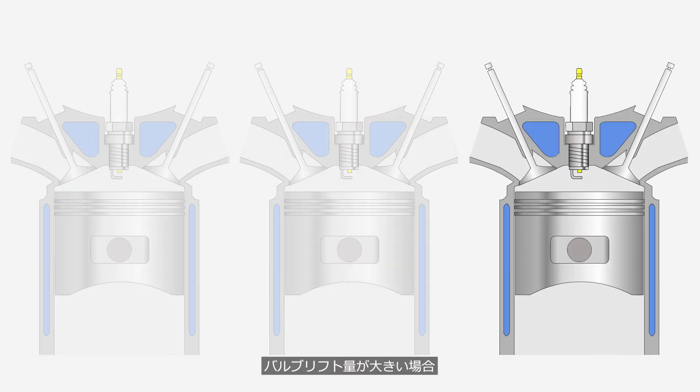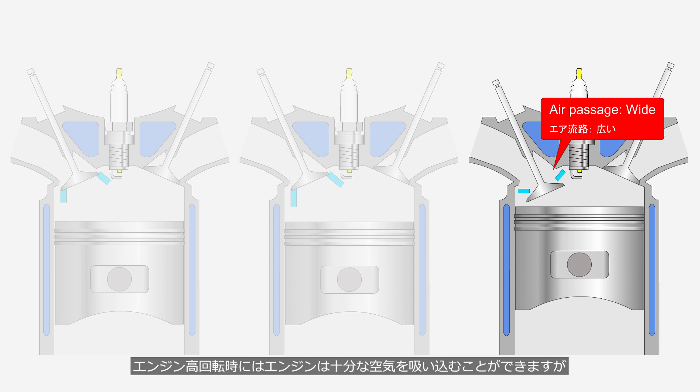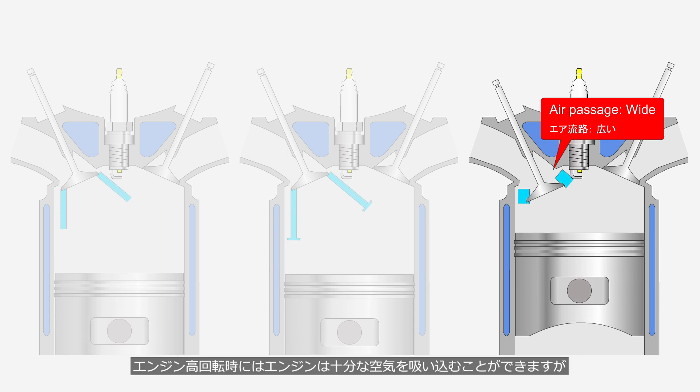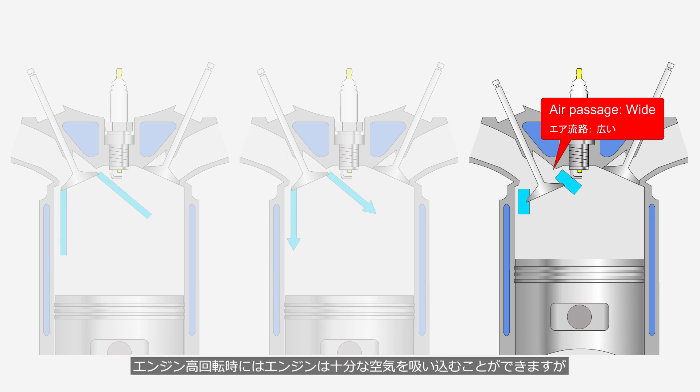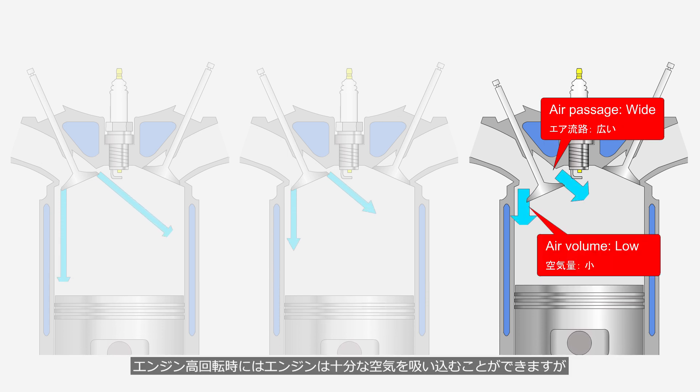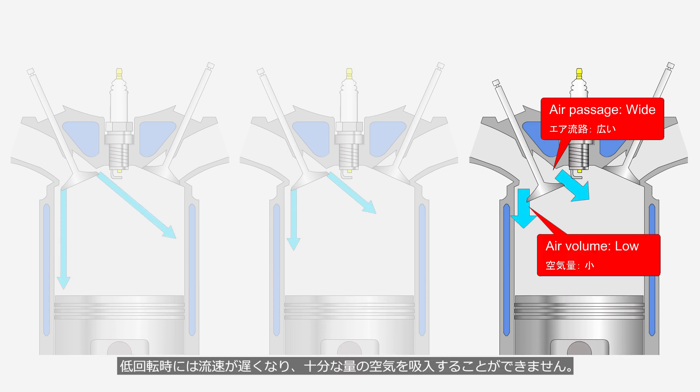With a large valve lift, the engine can intake sufficient air at high engine speeds. But at low engine speeds, the air velocity decreases, and the engine cannot intake a sufficient amount of air.